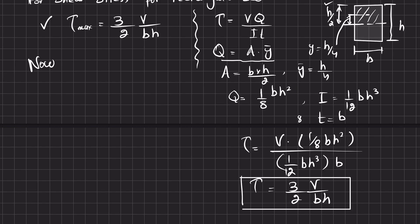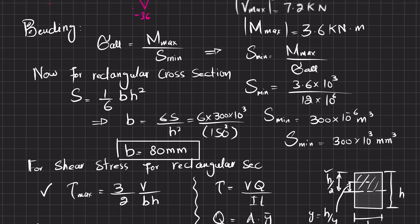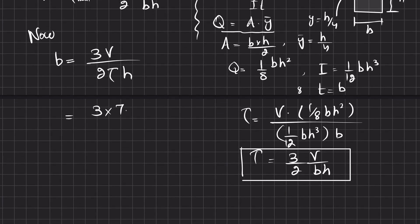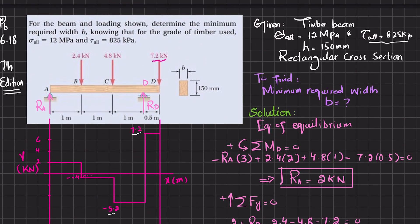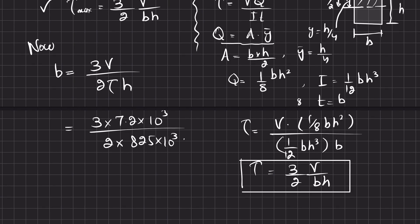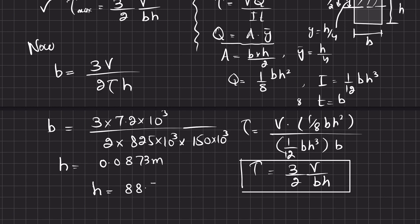Solving for b from the shear formula: b = 3V / (2τh) = (3 × 7.2 × 10³) / (2 × 825 × 10³ × 0.150) = 0.0873 m = 87.3 mm. This breadth is based on the shear stress criterion.